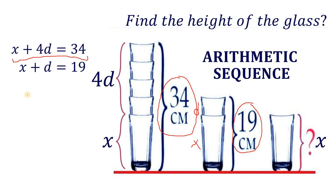Now, we need to solve for the value of x. So to do that, what we're going to do is subtract the two equations. Because if we do this, x minus x cancels out and we have 4d minus d, which gives us 3d. And 34 minus 19 gives us 15.